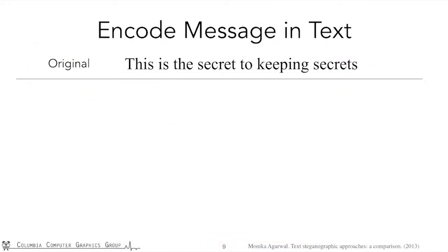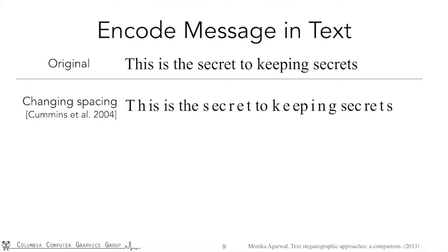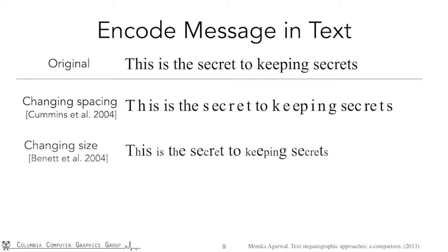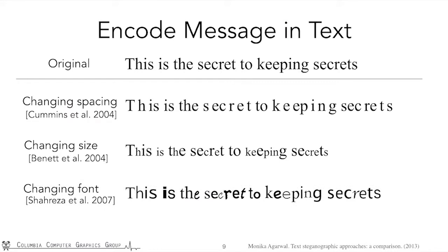In the research community, there is also some work on embedding messages in digital files. One option is by changing the spacing between each character — for instance, regular spacing represents bit zero, and large spacing represents bit one. Another approach is to change the character size: large characters indicate one, small characters indicate zero. A third option is by changing the font, where each character uses a different font to represent the bit.